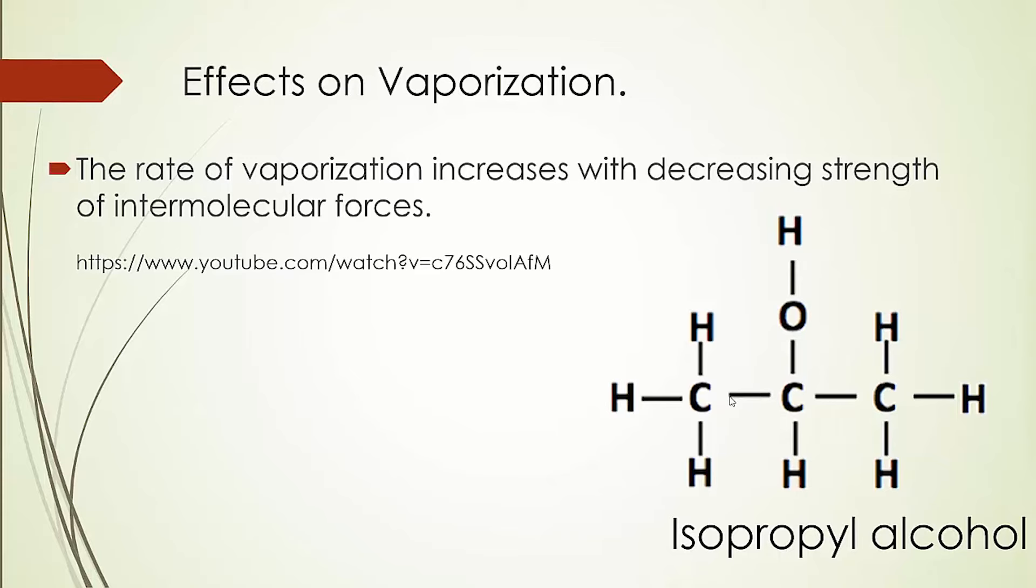Pour a small amount of water onto one part of a surface. Now, on another part of the surface, pour a very small amount of isopropyl alcohol. That's otherwise known as rubbing alcohol and isn't dangerous if you use a small amount. Water has much stronger intermolecular forces because it has two hydrogen bond areas, as opposed to isopropyl alcohol, which just has one.